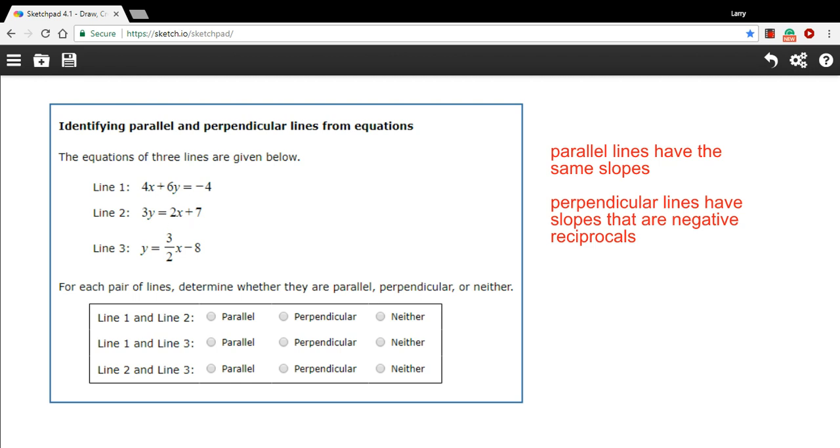In this case here, we've got one line written in standard form, one line that's almost in slope-intercept form except the y is multiplied by 3, and then one line that's already in slope-intercept form. I would suggest you start by putting everything in slope-intercept form. It's just easier to read the slopes, which is what we're dealing with here.